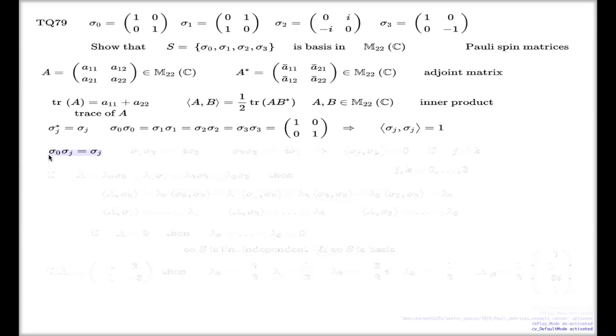All the couplings where sigma nought is present are very simple, because sigma nought is the identity matrix. When you multiply everything by the identity matrix, it becomes the same matrix. So when you couple sigma nought with sigma j, it will be simply sigma j.